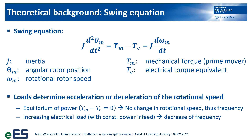First, let us talk about the theoretical background. A simplified method for the description of the synchronous generator behavior is the swing equation. It shows the correlation between acceleration or deceleration of the rotor and the power delivered by the prime mover or consumed by the electrical grid. For a power equilibrium, the rotor will not change its actual frequency. The rotor will be slowed down when the electrical loads are increased with a static power in-feed from the prime mover.